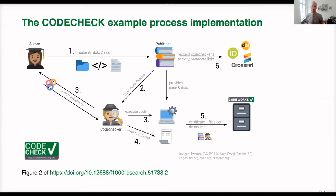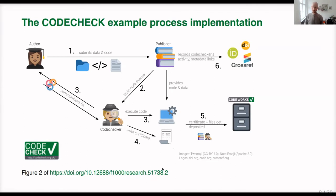We have come up with an example process for embedding CodeCheck in the scientific publishing workflow. There's the publisher, the author, and the code checker. We think we have come up with a good way to approach publishers and say this is what we would like to work together on — how to integrate code checks into publications. One thing that's very important to us is that the digital artifacts created — in our case the CodeCheck report — are properly deposited and citable. That gives credit to the code checker, and we think it's the publisher's responsibility to do just that.